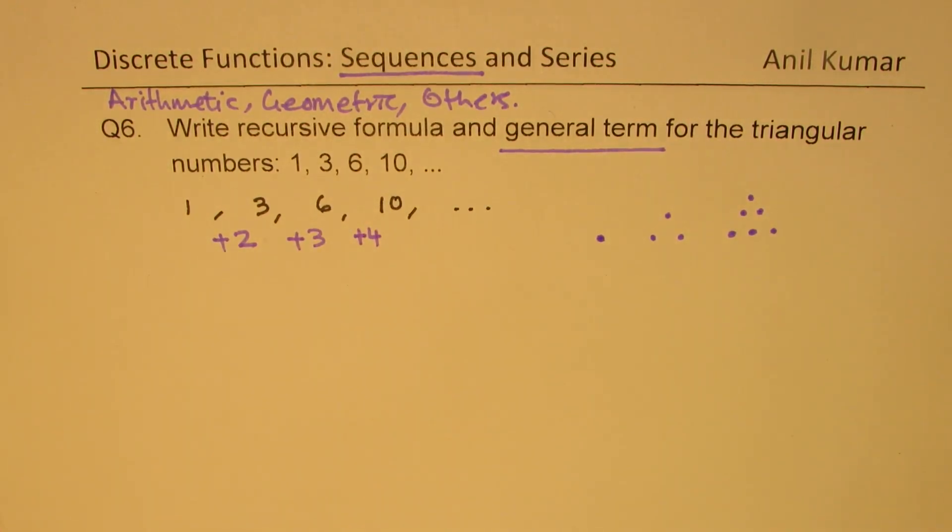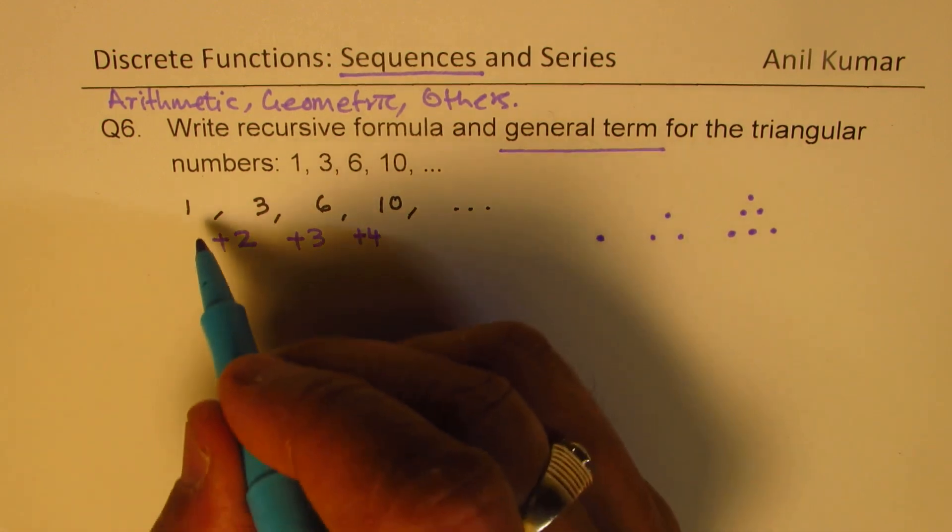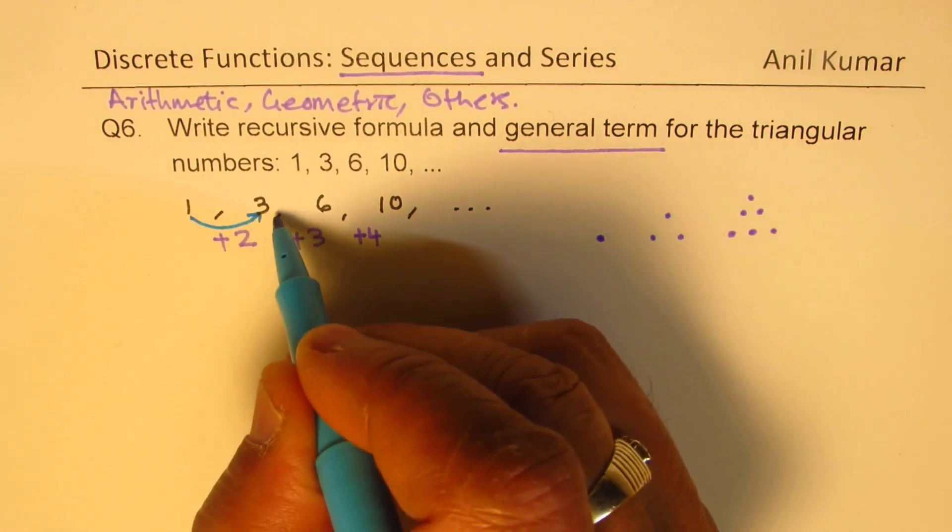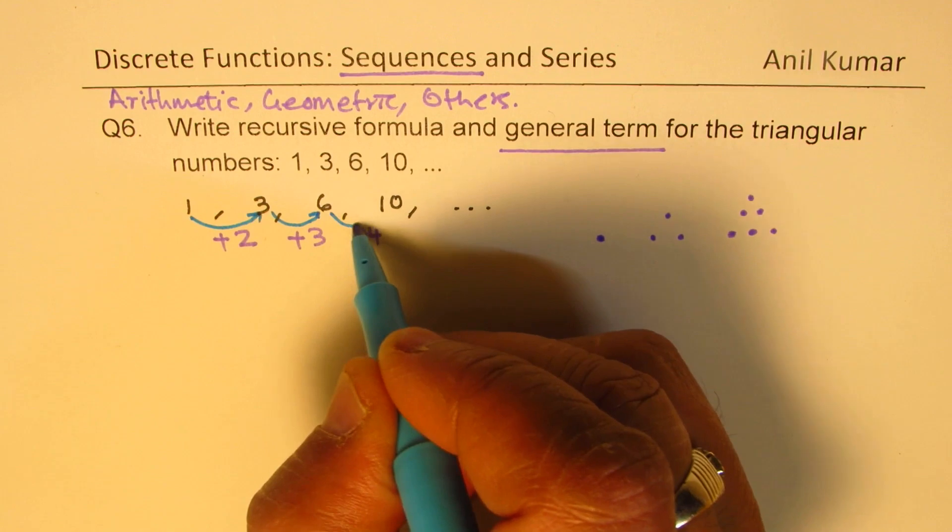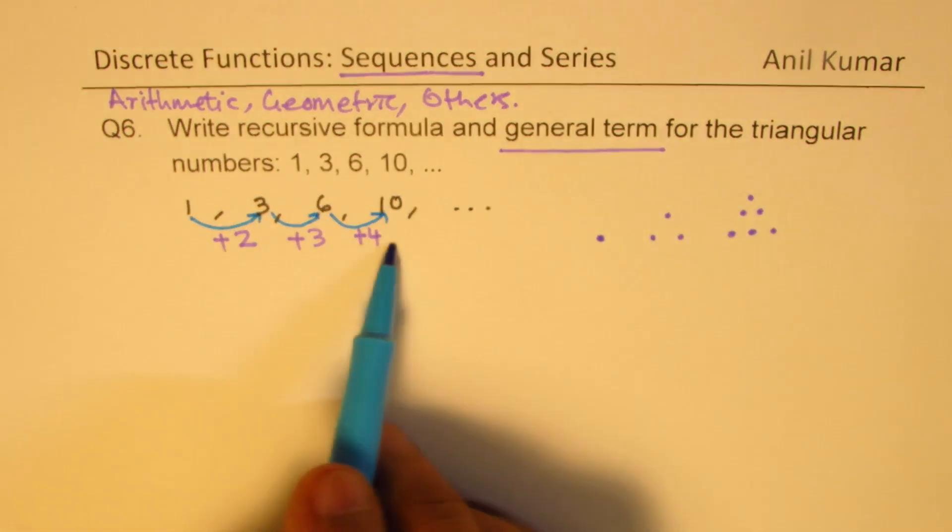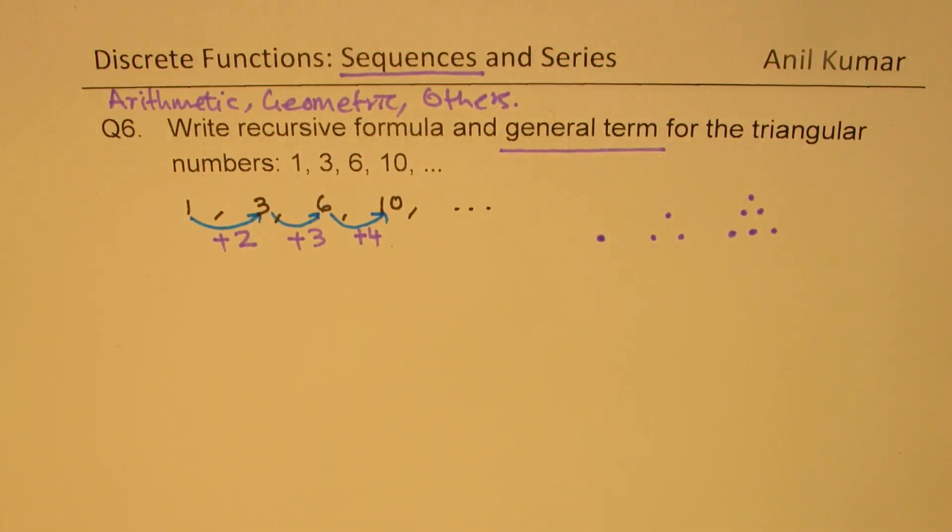So that is how we are actually getting our sequence. The rule is: when you add a number, increase it by one each time. Is that clear? So that is the kind of rule which is being followed. How do I write this as a general term?